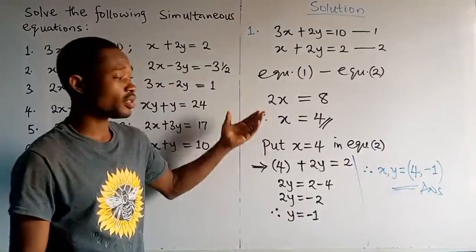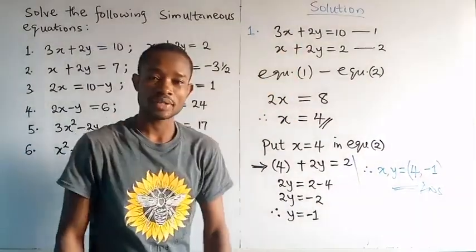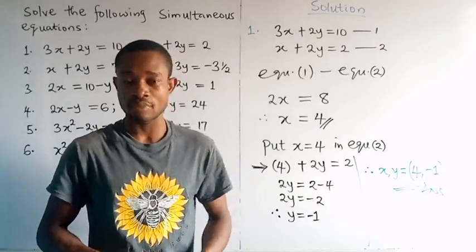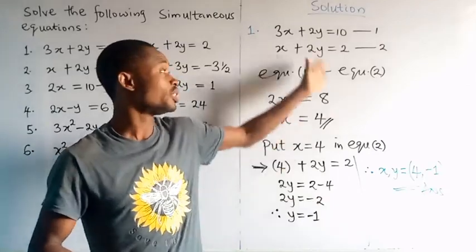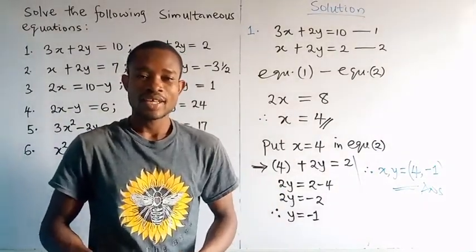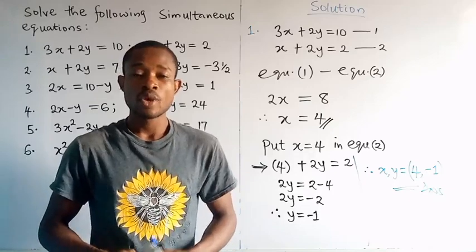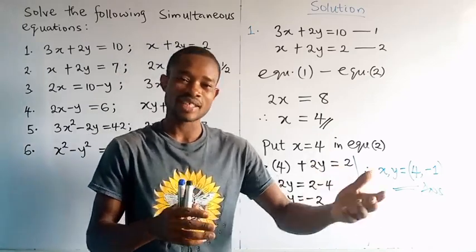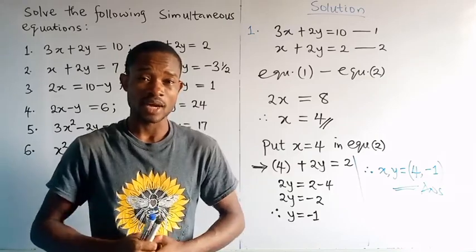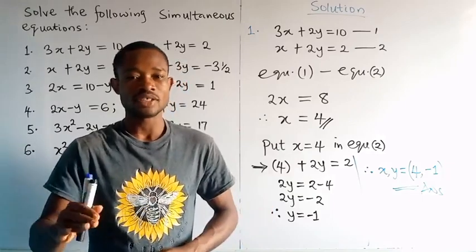We have solved this simultaneous equation by finding the values of x and y. Remember the principles: we didn't need LCM here because the coefficients were already equal; the signs of y were the same in both equations, so we used subtraction. If the signs were different, we would use addition. Once you know these rules, your problem is solved.